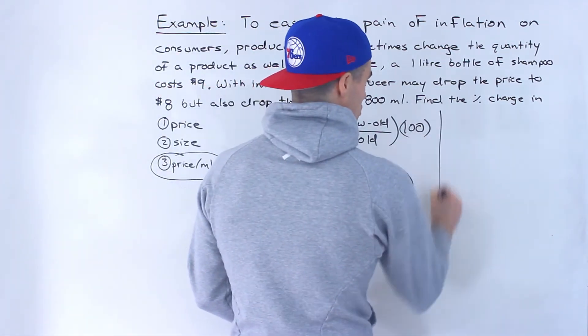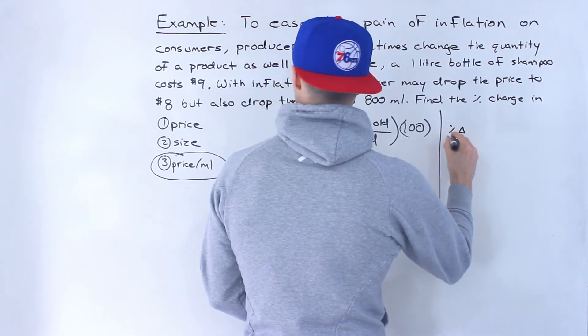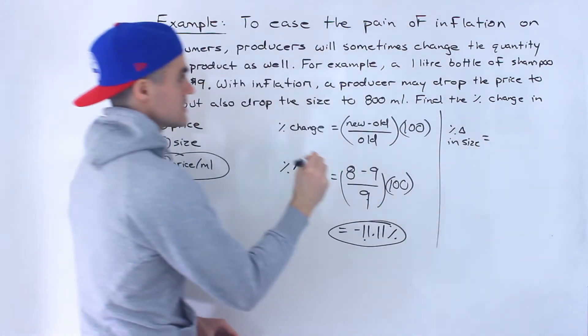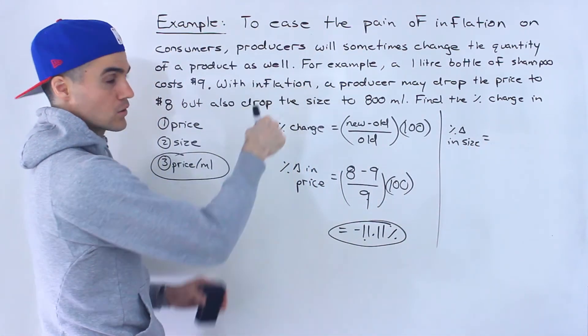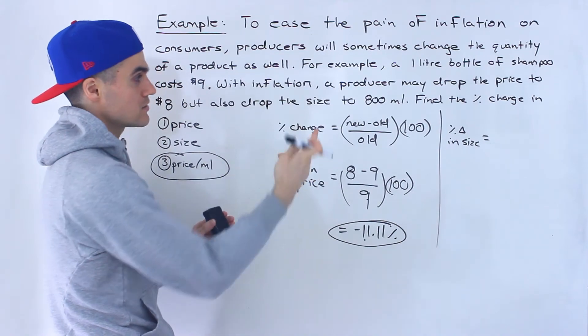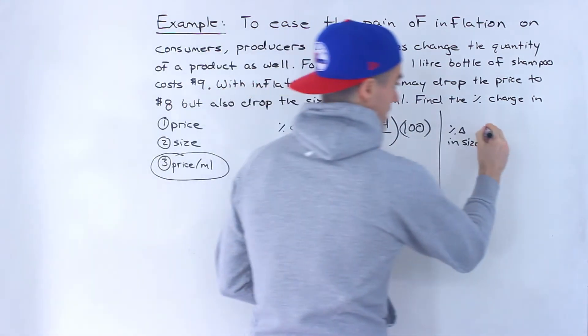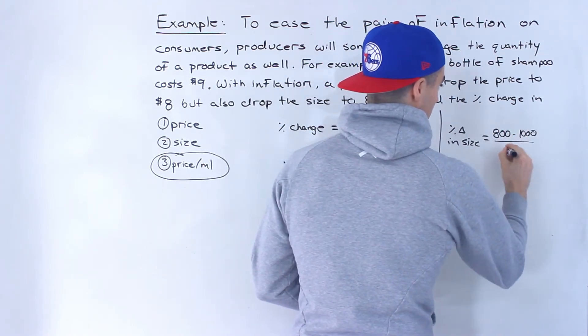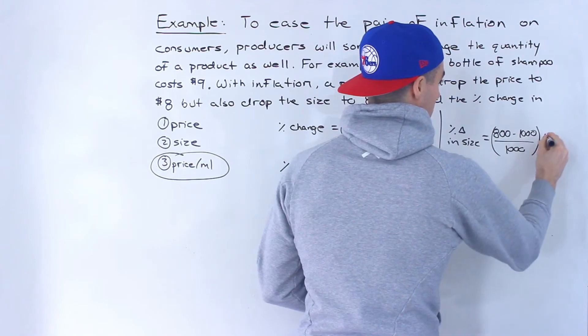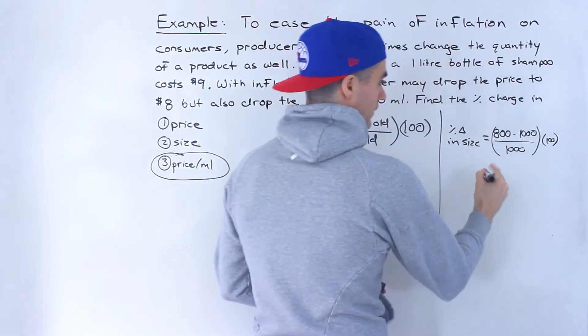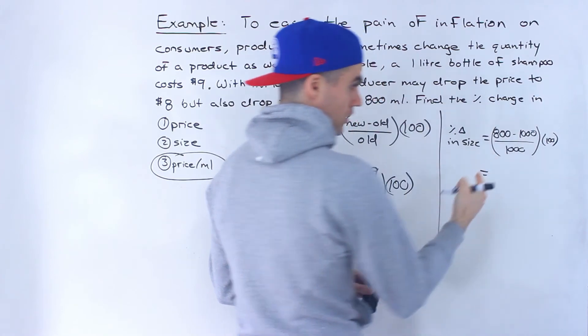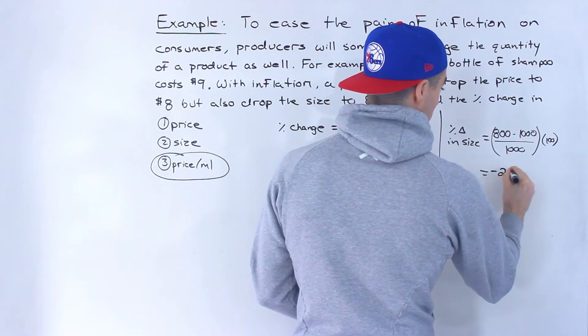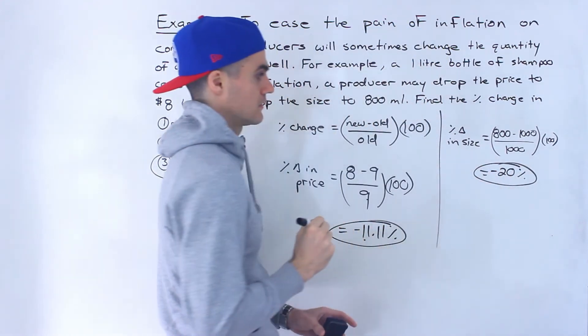Now the percentage change in size or quantity. Notice it started off at one liter, which is the same as 1000 milliliters, and then it dropped down to 800 milliliters. So the new size is 800, the old size is 1000, and then you multiply that by 100. You'd get negative 200 over 1000, which gives you negative 0.2 multiplied by 100, which gives you negative 20%.